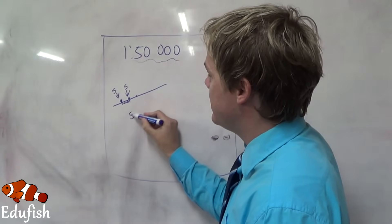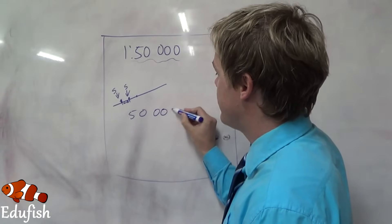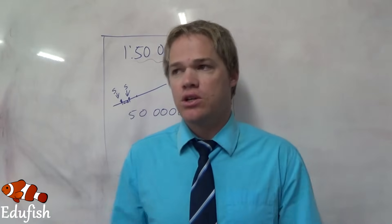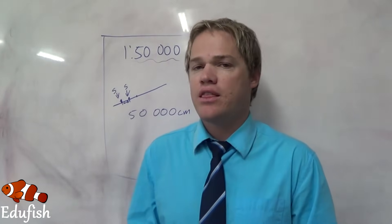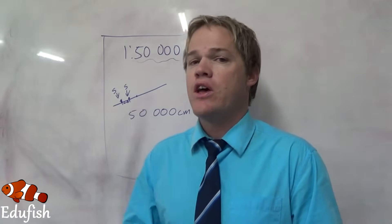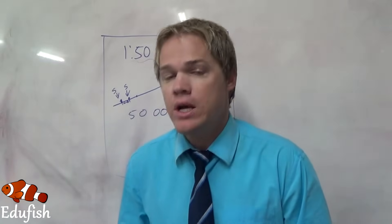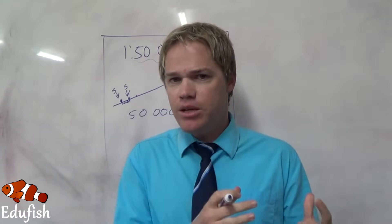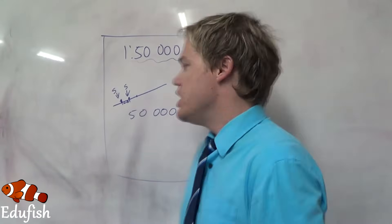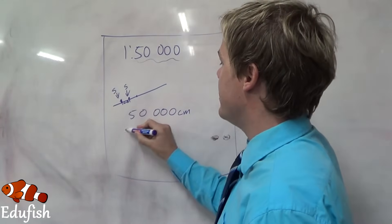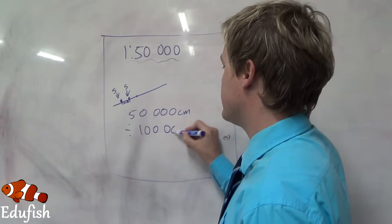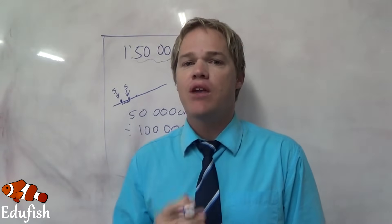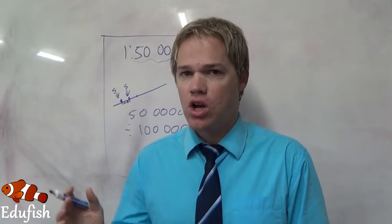So this 1 cm is equal to 50,000 cm. Now obviously we are not going to say you go 50,000 cm further down the street to get to the next shop. We want to say something like meters or kilometers. So how do we convert centimeters to kilometers? Very simple — you are going to divide by 100,000, because there are 100,000 cm in one kilometer.